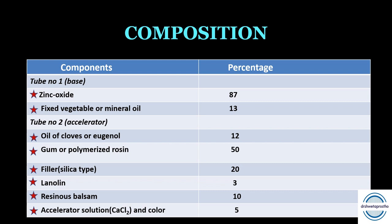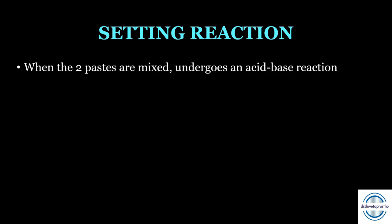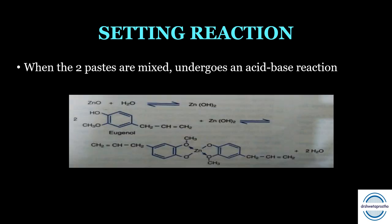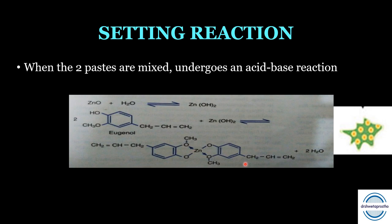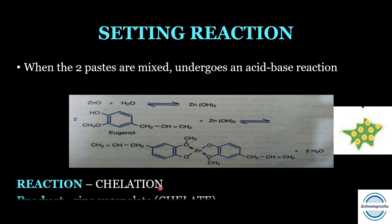The setting reaction of ZOE impression paste is a typical acid-base reaction to form a chelate. When the two pastes are mixed, zinc oxide reacts with water to form zinc hydroxide (the base). Eugenol acts as a weak acid and reacts with the base to form a chelate called zinc eugenolate. In the microstructure, the matrix is formed by zinc eugenolate and the core contains unreacted zinc oxide particles.